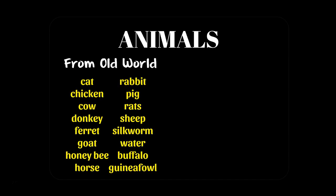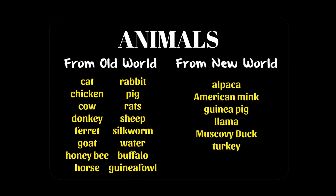From the New World or the Western Hemisphere to the Eastern Hemisphere, we see the exchange of alpaca, American mink, guinea pigs, llamas, muscovy ducks, and turkey, to name just a few. As you can see here, there was much more movement of animals from the Eastern Hemisphere to the Western Hemisphere, with significant consequences.